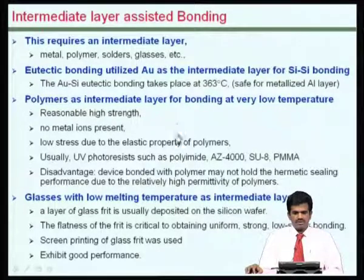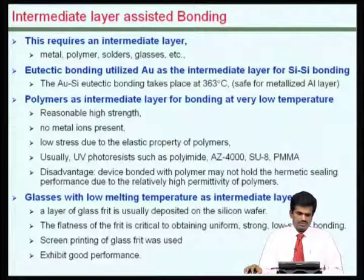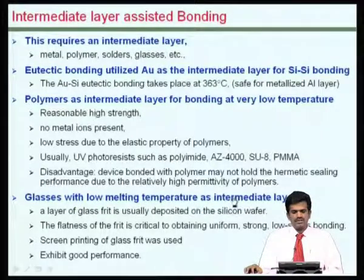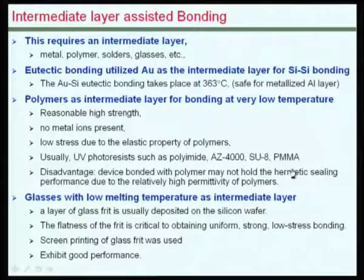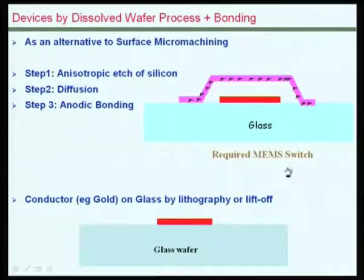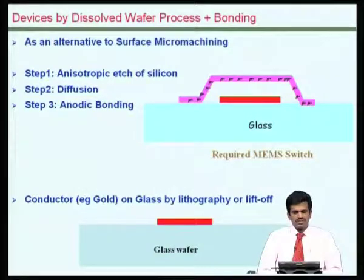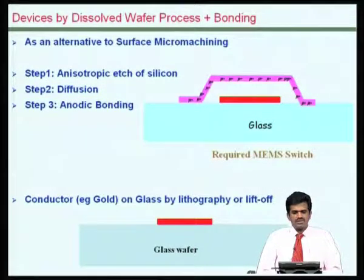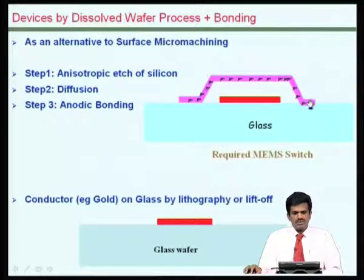Polymers have the advantage that they require relatively lower temperatures. It is also possible to use a glass frit layer to facilitate bonding at relatively low temperatures and low stress. We will now see how this can be extended to building microsystems. What I show here is an alternate approach to build a micro switch using a process known as the dissolved wafer process, which involves glass-to-silicon bonding.